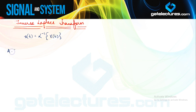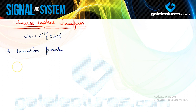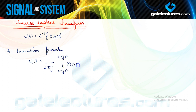The first way to find inverse Laplace transform that we are going to look at is the inversion formula. Just as we had one basic formula to find the Laplace transform, we have one formula to find the inverse as well. This formula applies to all classes of transform functions and involves the evaluation of a line integral in the complex S plane. We use this formula to find x(t), which is 1/(2πj) times the integral from C minus j∞ to C plus j∞ of X(s) times e^(st) ds.